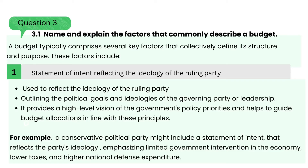Question 3: name and explain the factors that commonly describe a budget. A budget typically comprises several key factors that collectively define its structure and purpose. These factors include: 1. A statement of intent — this statement is used to reflect the ideology of the ruling party by outlining the political goals and ideologies of the governing party or leadership. It provides a high-level vision of the government's policy priorities and helps to guide budget allocations in line with these principles.